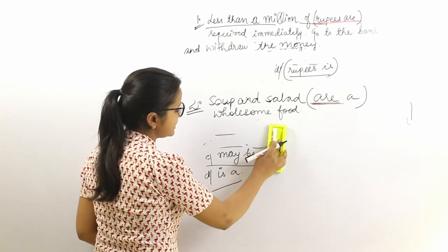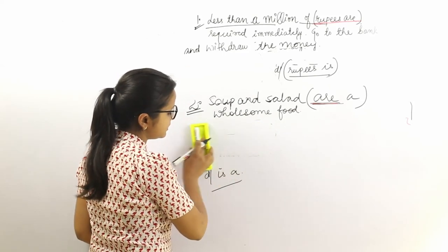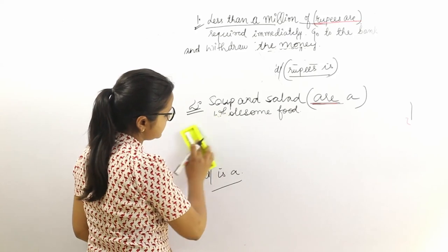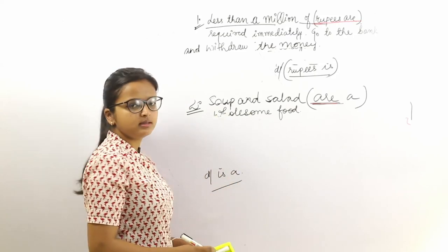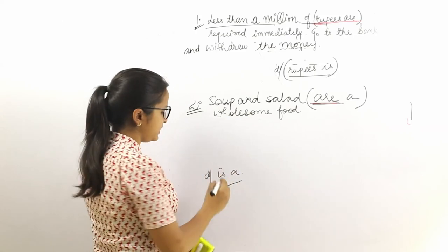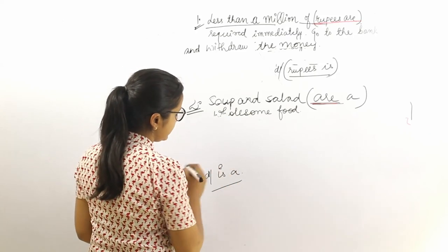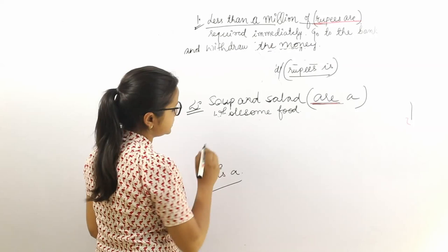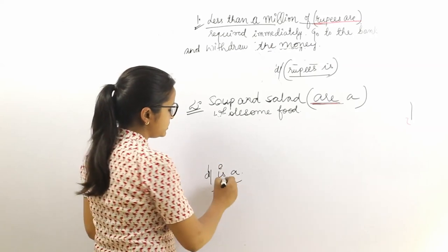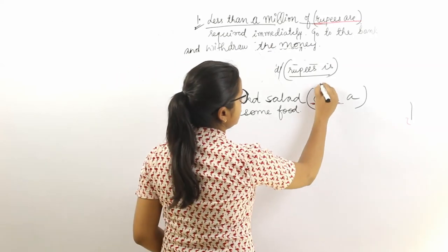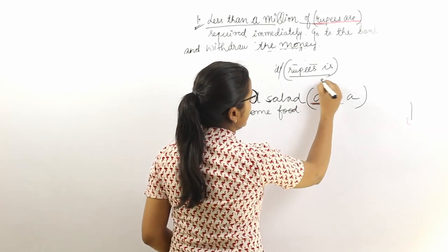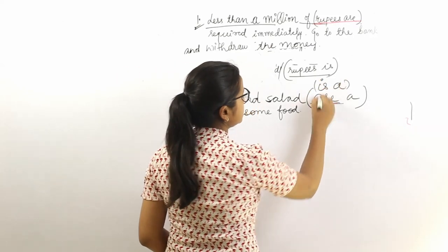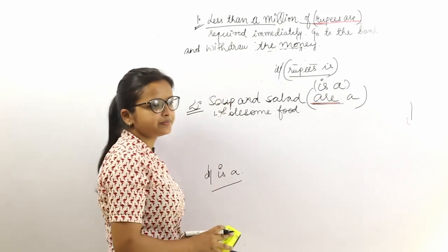We do not doubt that soups and salads are good for health, so 'may be' is eliminated. We are left with 'is a,' which is the correct answer.